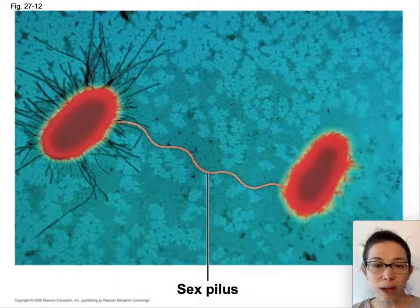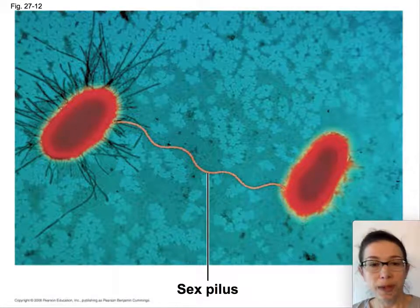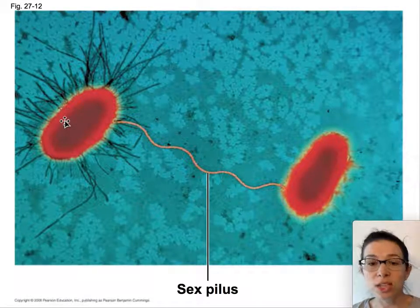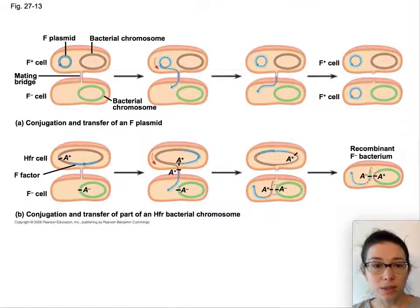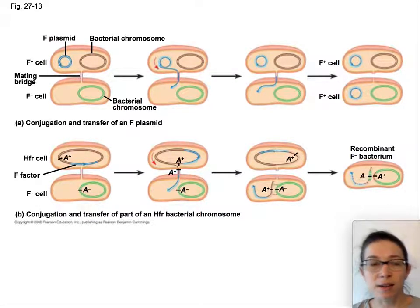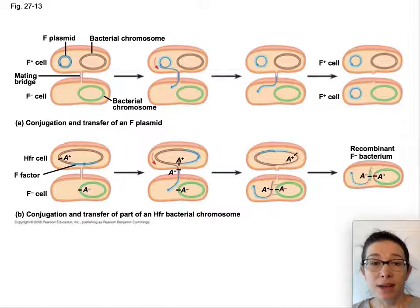Another way is bacteria will directly transfer DNA to each other through a sex pilus. Here, the donor bacteria has sent out a long protrusion and is actually transferring DNA to the other cell. This is a great way for bacteria to acquire antibiotic resistance. In that cartoon we see the bacteria has its main chromosome, and an F-plasmid carrying antibiotic resistance. When these two bacteria come together through that mating bridge, the parent bacteria transfers that resistance to the next bacteria.